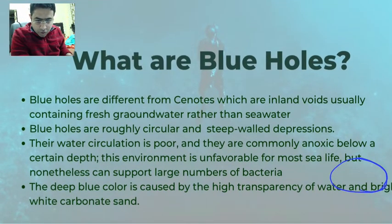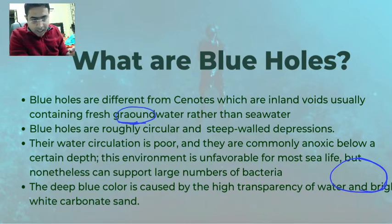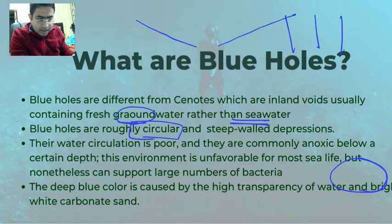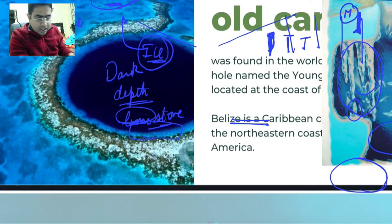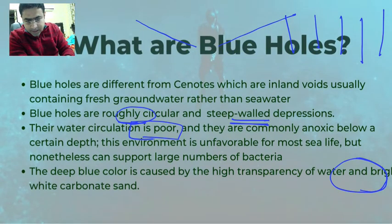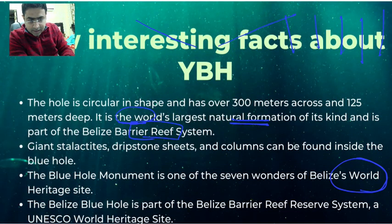Inside these blue holes, there is groundwater as well. Both types of water are present — sea water as well as groundwater. These blue holes remain in a circular shape with steep walls — it's not a gradual slope. The water circulation inside is very poor, it does not circulate much. Keep that in mind — that is very important.